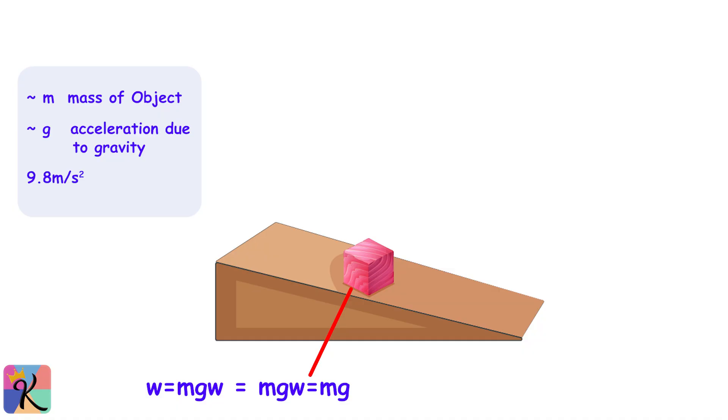But here's where things get interesting. Because the surface is tilted, the weight of the block doesn't just pull straight down. It has to be split into two components: one acting parallel to the ramp and the other acting perpendicular to it. The parallel component is Mg sin theta, which is the force that actually pulls the block down the ramp. Think of this as the block's urge to slide downhill.